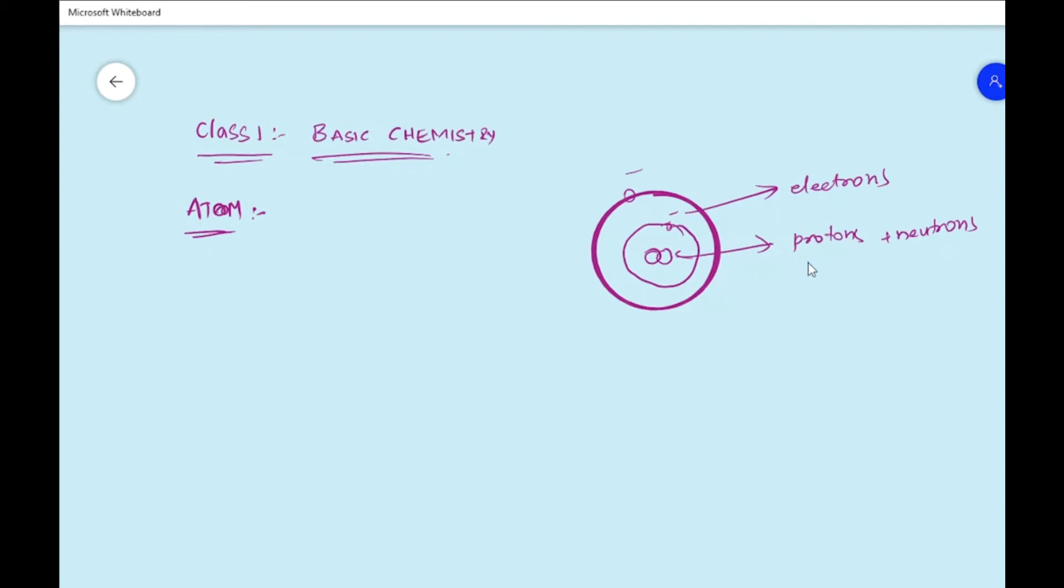So the protons and neutrons are called the nuclei. The protons are positively charged, whereas electrons are negatively charged. And the neutrons do not have any charge.